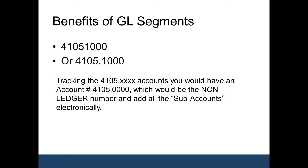So just a quick overview: segments in the general ledger account number structure are sections of your account numbers for your chart of accounts. They're basically the way you break out your account numbers into different parts. The benefit of doing that is all about reporting — how you want to track your transactions that post to a specific account.